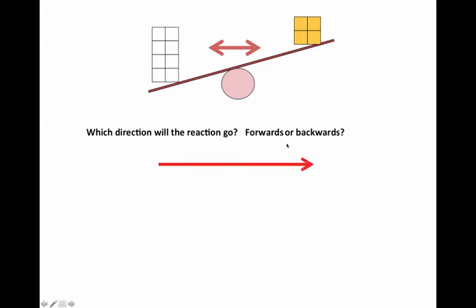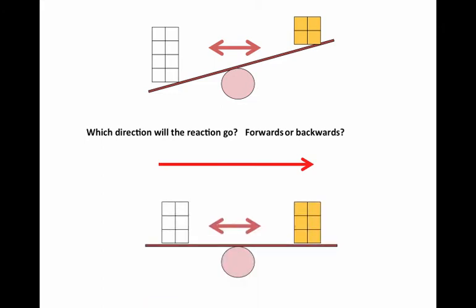If you said the reaction should go forwards then you would be correct. By converting some of that substrate into product we would restore an equal balance of substrates and products and be back at equilibrium again.